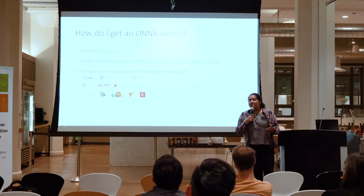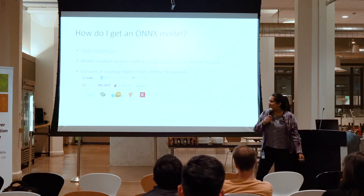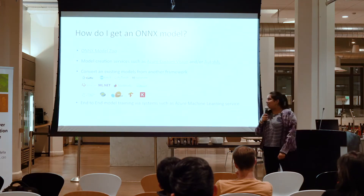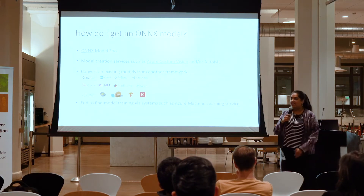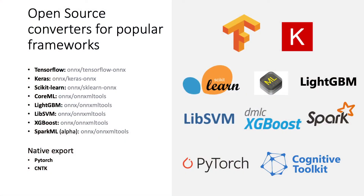Alternatively, you can convert an existing model from a different framework. We have a variety of frameworks supported and more being added every day — including CNTK, CoreML, Scikit-Learn, TensorFlow, Keras, and Caffe2. Another alternative is end-to-end model training with systems like Azure Machine Learning or various other cloud service providers. We provide open source converters for all of these, including an interesting native export feature in CNTK and PyTorch.